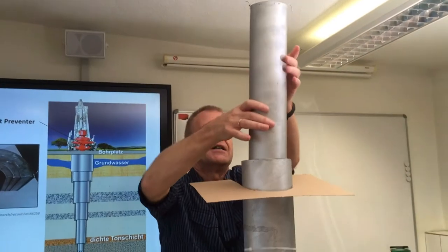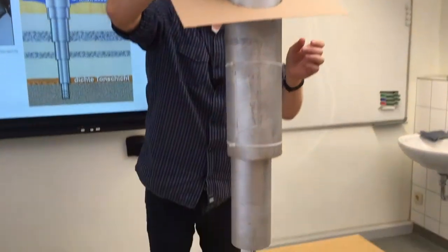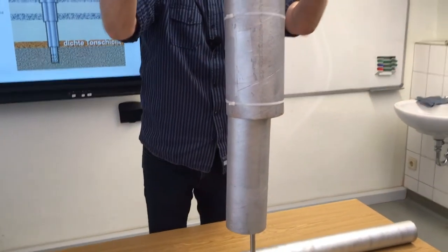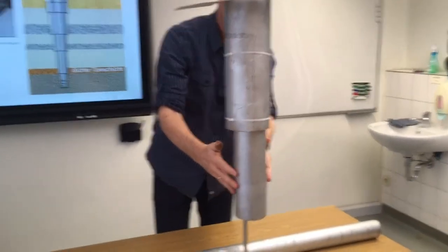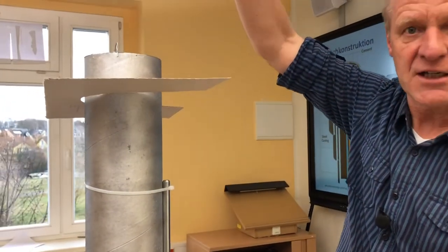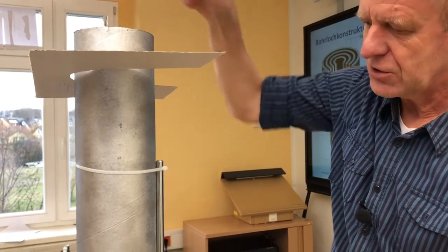As the hole deepens it can become unstable. Therefore, we run a new casing string into the hole and cement it in place again. And then we run in hole with the next drill string, which is smaller in diameter, to drill the next borehole section.